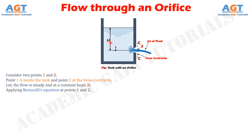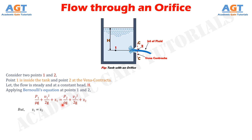Applying Bernoulli's equation at points 1 and 2 we get: p1 divided by ρg, plus v1 squared divided by 2g, plus z1, equals p2 divided by ρg, plus v2 squared divided by 2g, plus z2. Since z1 and z2 are equal, they cancel from both sides.